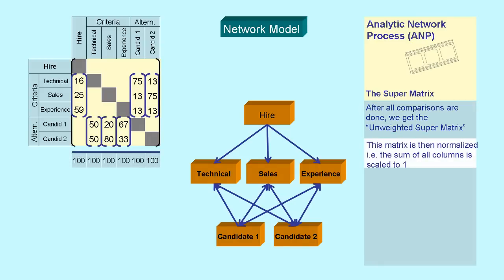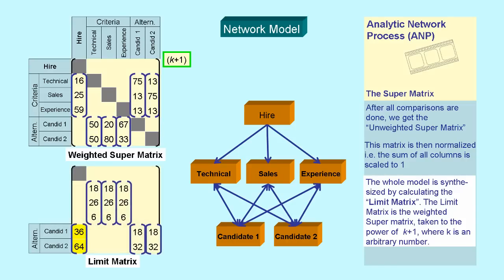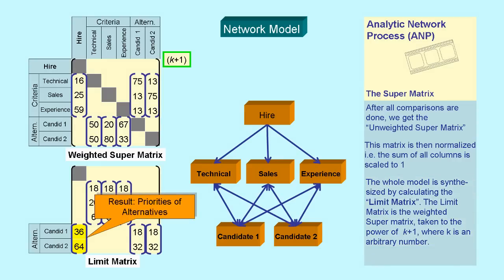The matrix is then normalized, so the sum of all columns is scaled to 1, resulting in the weighted supermatrix. The whole model is synthesized by calculating the limit matrix. The limit matrix is the weighted supermatrix taken to the power of k plus 1, where k is an arbitrary number. As a result, we get the ranking of alternatives in the network model.